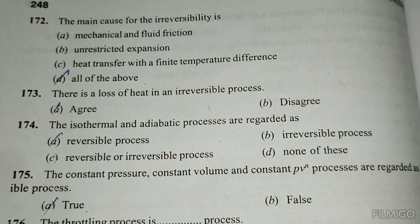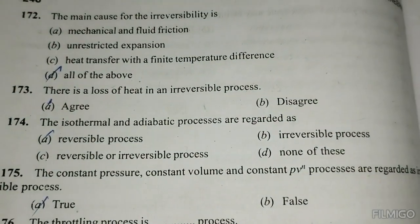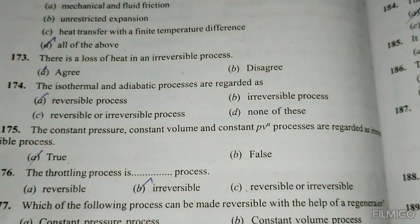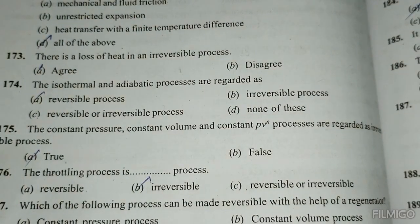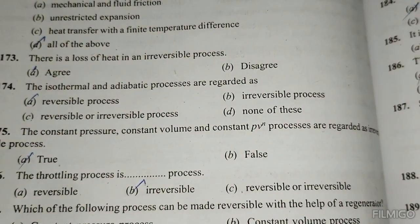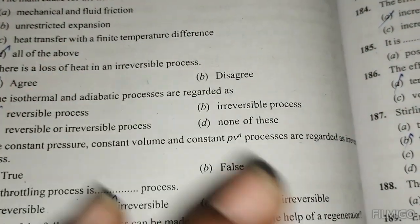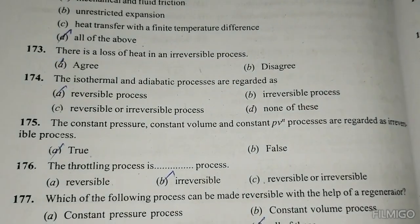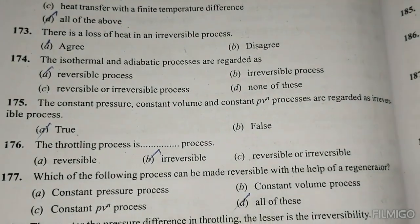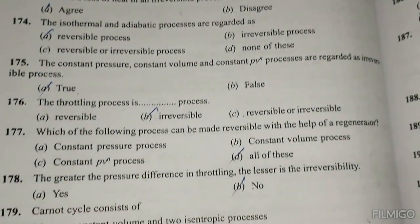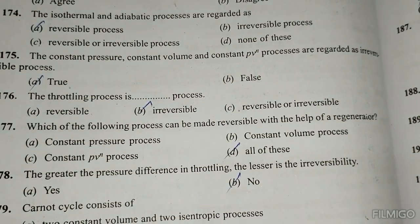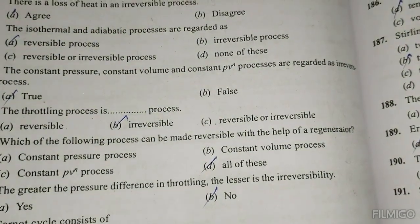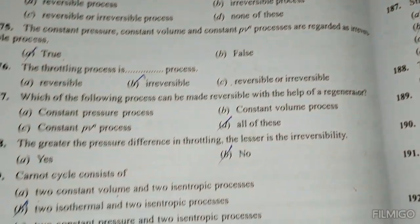The isothermal and adiabatic processes are regarded as reversible processes. Constant pressure, constant volume, constant PV-power processes are regarded as irreversible processes. The throttling process is irreversible. Which of the following processes can be made reversible with the help of a regenerator? All of the above.